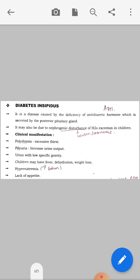Clinical manifestation of diabetes insipidus: First is polydipsia, which is excessive thirst in children. Next is polyuria, which is increased urine output. Urine with low specific gravity. Children may have fever, dehydration, or weight loss due to excessive thirst.